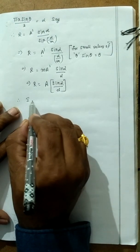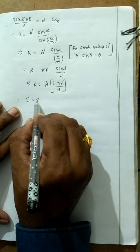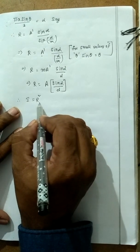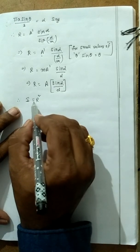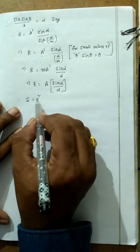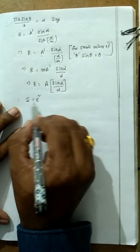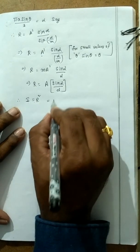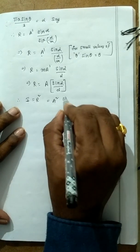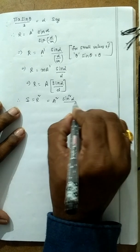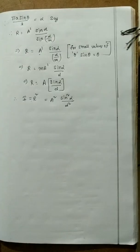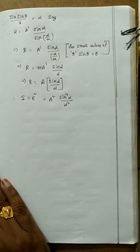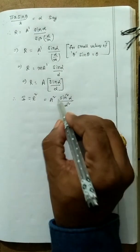We know that intensity is proportional to the square of the amplitude, so I = R². Therefore, I = A² sin²α / α². This is the intensity formula for single-slit diffraction.